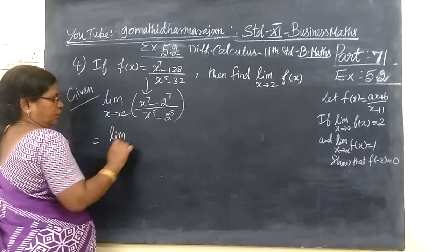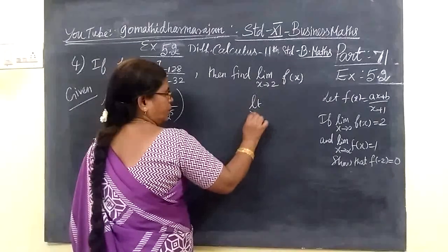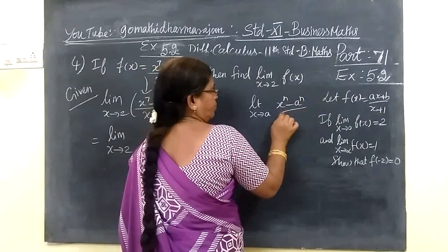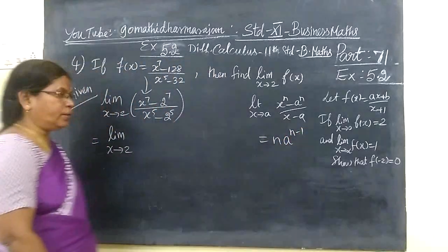This is equal to limit x tends to 2. The formula is limit x tends to a, x power n minus a power n by x minus a equal to n times a power n minus 1.